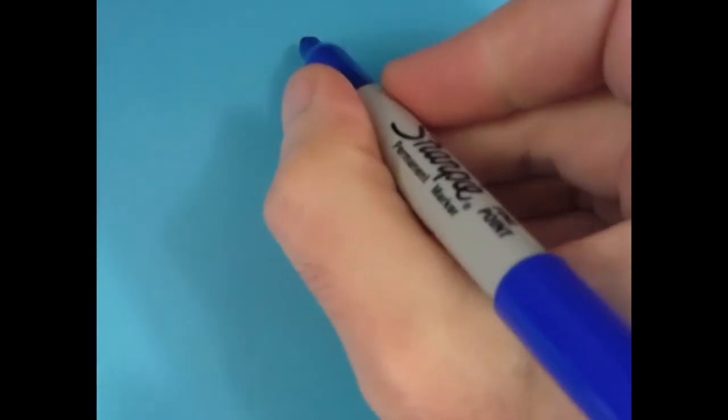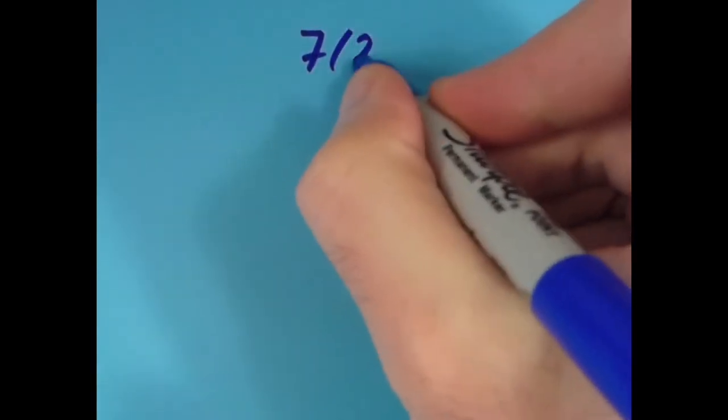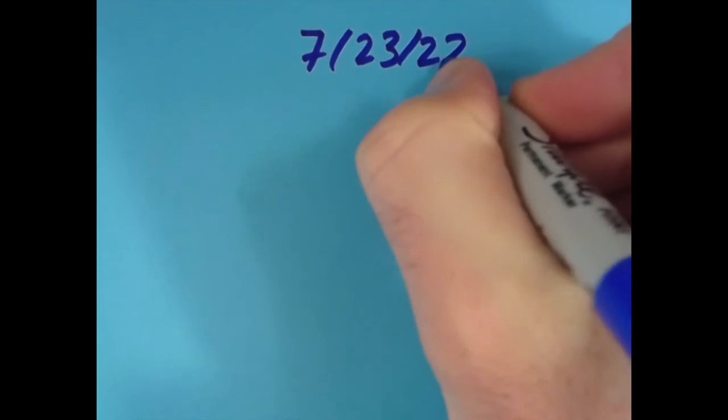Anyway, tomorrow is going to be the 23rd of July, so that means we can write the date as 7/23/22. So go ahead and see if you can come up with an equation for the digits in this date. I'll do the same thing and come back with a new video tomorrow with my results, and of course you can put any results from this in tomorrow's video's comment section.